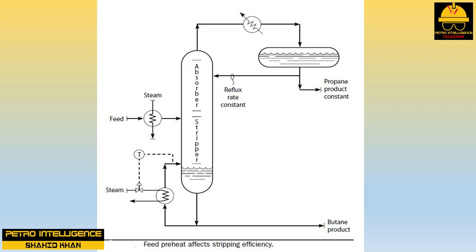How does this increase in feed preheat affect the flow of vapor through the trays and the fractionation efficiency? The bottom part of the tower below the feed inlet is called the stripping section; the upper part above the feed inlet is called the absorption section. Since both reflux flow and overhead product flow are constant, the weight flow of vapor leaving the top tray is also constant regardless of the feed preheater duty — this is approximately true for all the trays in the absorption section. For the bottom stripping section trays, a reduction in reboiler duty will directly reduce the vapor flow from the reboiler to the bottom tray.